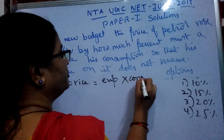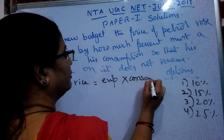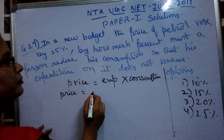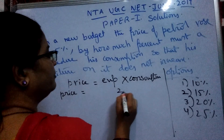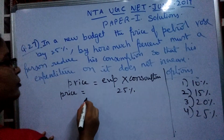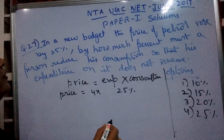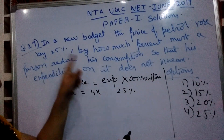Now see the next question — question number 27. In a new budget, the price of petrol rose by 25%. By how much percent must a person reduce his consumption so that his expenditure on it does not increase? Options are 10%, 15%, 3%, 20%, 4%, 25%.